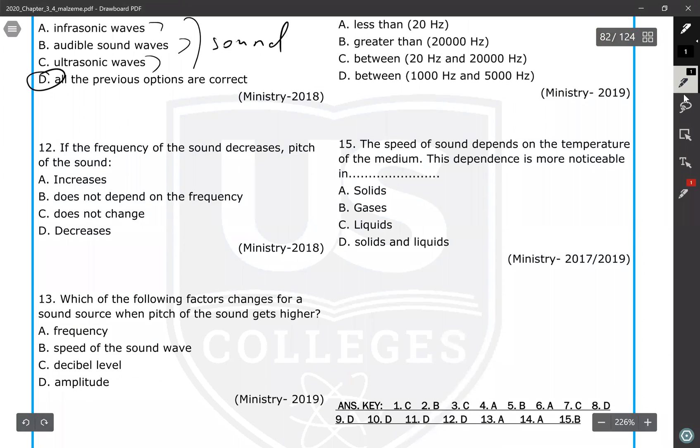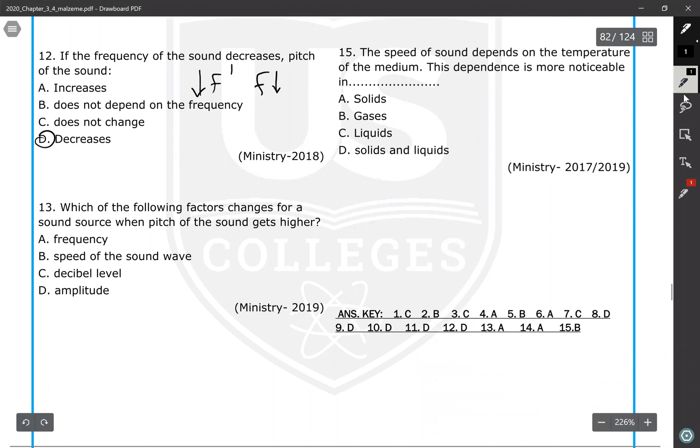If frequency of the sound decreases, pitch of sound also decreases. As I said, they are directly proportional. As frequency of the source decreases, the pitch detected by the human ear also decreases.